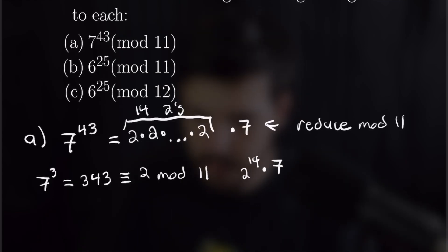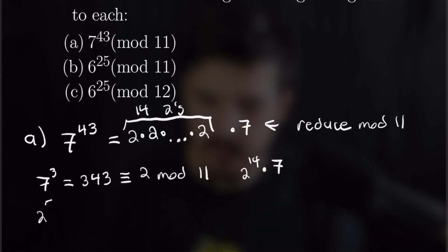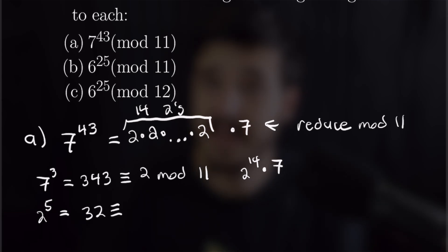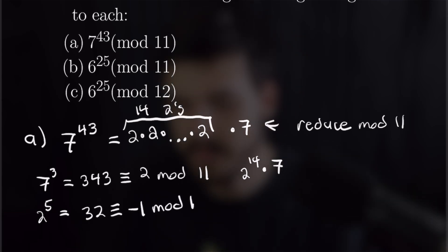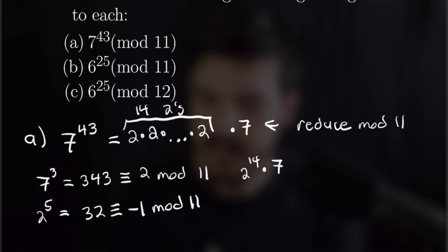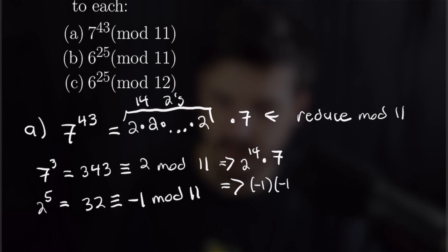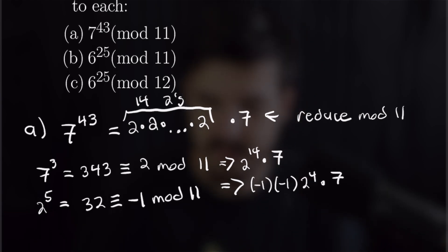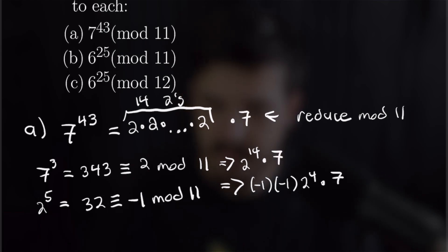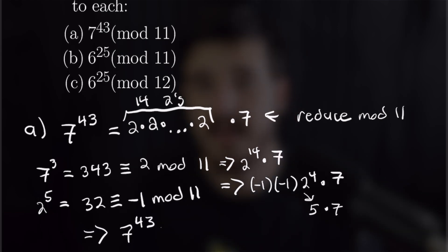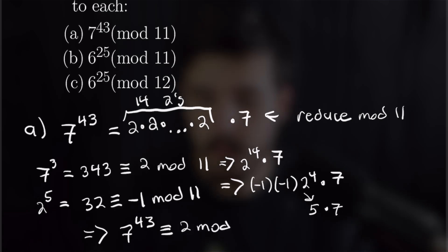To reduce further: 2 to the 5th is 32, which is negative 1 mod 11. So 2 to the 14th reduces to negative 1 squared times 2 to the 4th, which is 1 times 16, which is 5 mod 11. That gives us 5 times 7, and 35 is congruent to 2 mod 11. So the answer to part a is 2.